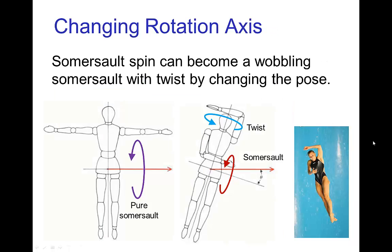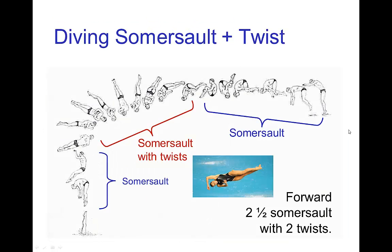Now, by changing the pose, the rotation can change significantly — not just in the rate, but also in the form of the rotation. We often see this in divers, where they may start with a simple somersault and go into this pose where they cross their arms, and that adds a twisting rotation to the somersault. Here's a sequence of images illustrating that — this is a forward two-and-a-half somersault with two twists. So we start with somersaults, then the diver changes to this pose; in that pose we still have a somersault rotation with a twisting motion on top. Then they bring the arms back, which returns them to a somersault rotation.